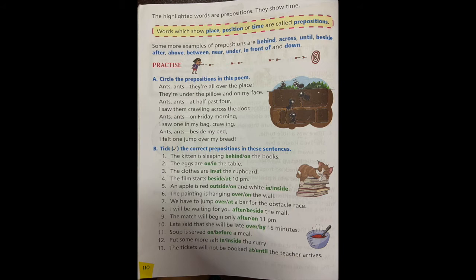Ants, ants, ants, at half past four, so at what time? At exactly half past four. That means at is the preposition. I saw them crawling across the door. Across. Ants, ants, ants, on Friday morning. Circle on. I saw one in my back crawling where? In. Circle in. Ants, ants, ants, beside my bed. Circle beside. I felt one jump over my bread. Over.